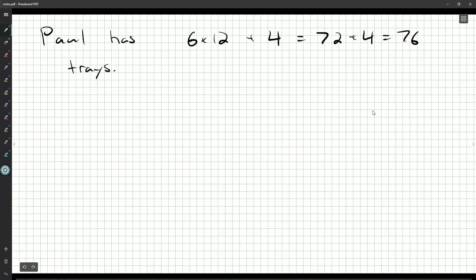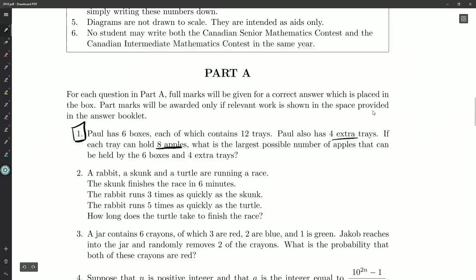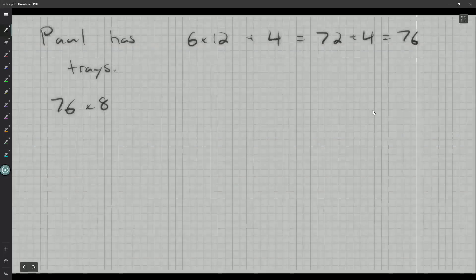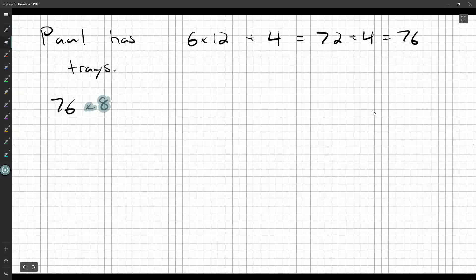And if each tray holds eight apples, let's double check that, the largest number of apples that can be held is 8 times 76. In fact, you're allowed to use a calculator. I'm not going to pick mine up for this. I'm just going to multiply it by hand. Eight times seven is 56 plus four is 608. So 608 apples.